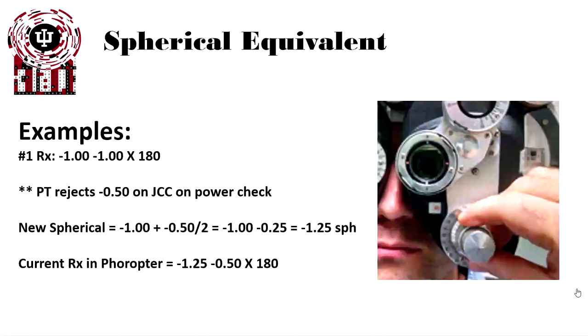Let's look at an example. The first patient is a minus 1, minus 1, 180 in the phoropter. That's what we've found so far. The patient rejects a half diopter of astigmatism on the JCC power check.